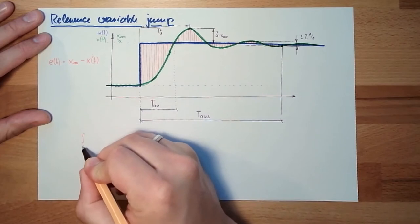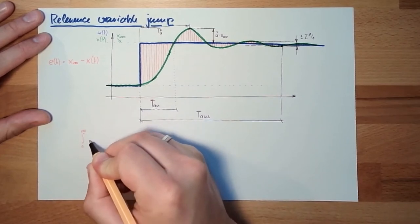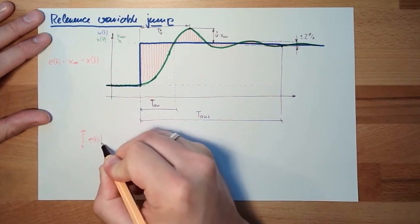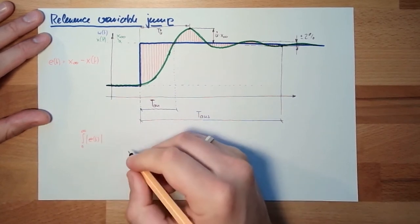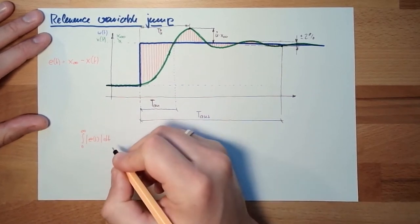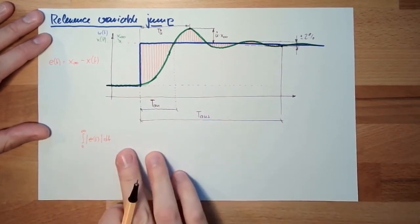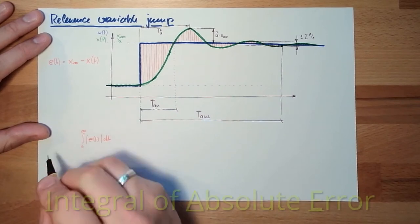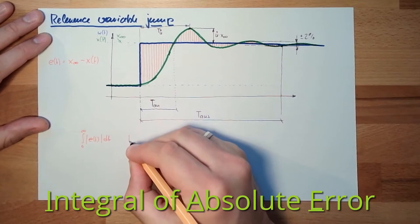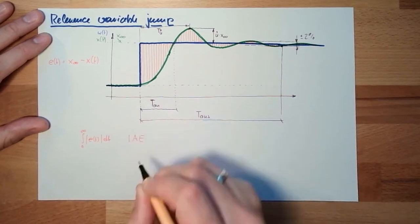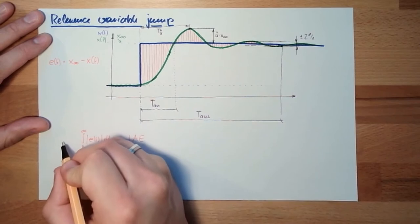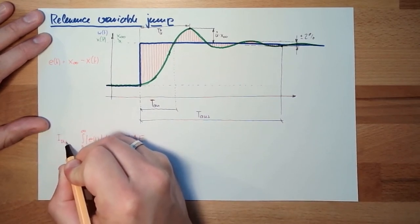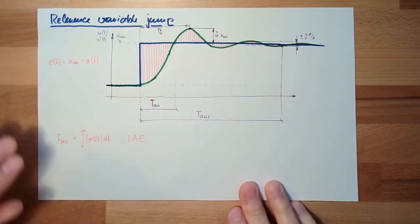So we are integrating from zero to unlimited, the error, but not only the error, we are using the absolute error dt. This criteria is the so-called integral of absolute error, IAE. That's one possibility. It's basically a simple building of the sum.